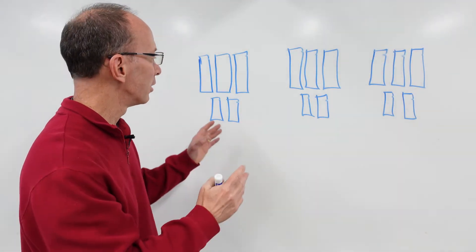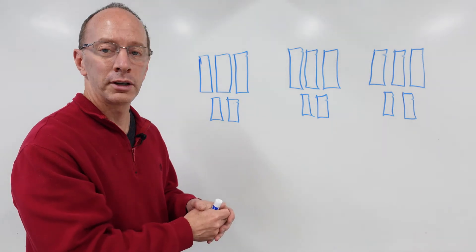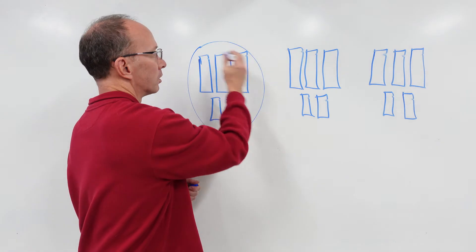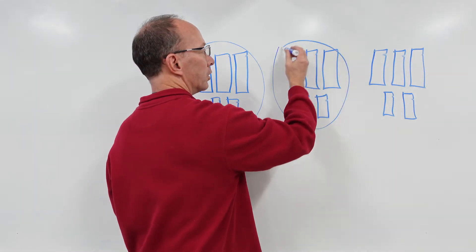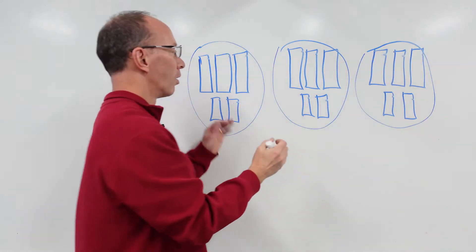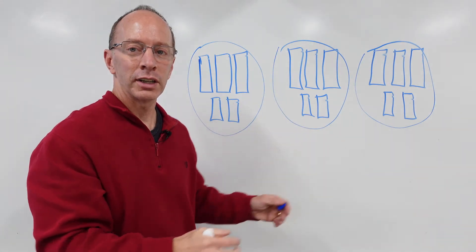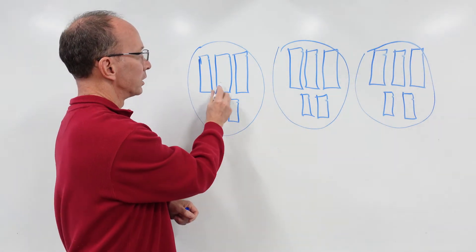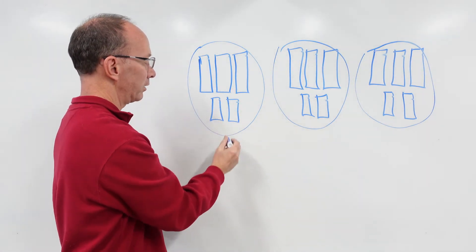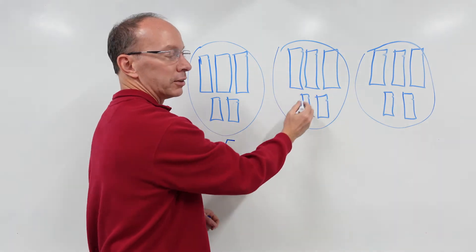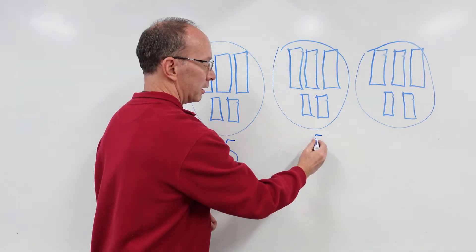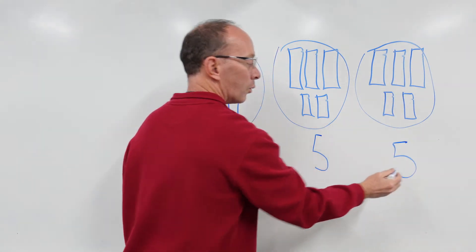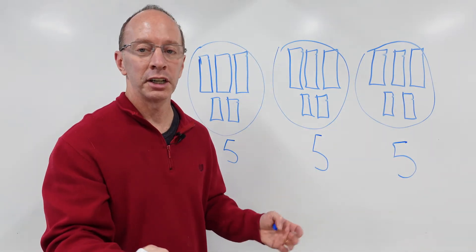Here we are with another example. We have three groups again, and if you want, you can put a circle around each group to isolate all the objects inside. Let's count how many are in each group: one, two, three, four, five — and again one, two, three, four, five — and one, two, three, four, five.